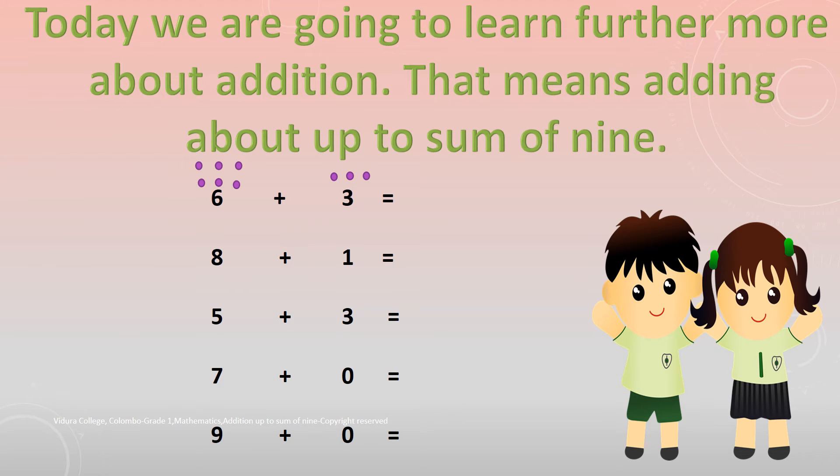Let's do more examples. 6 plus 3. How do you find the answer? First, draw 6 dots above number 6. Then, draw 3 dots above number 3. Now, count all the dots together. You will get number 9.